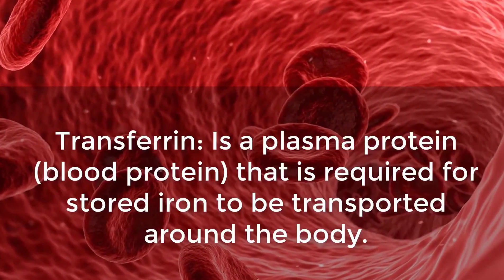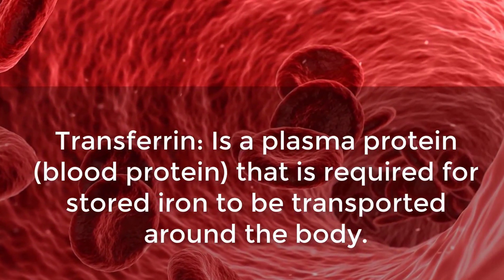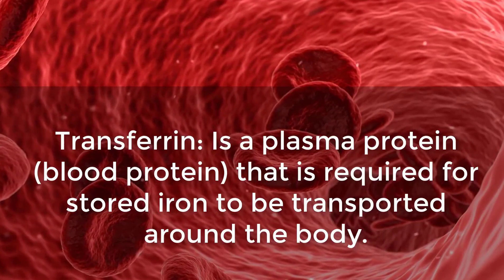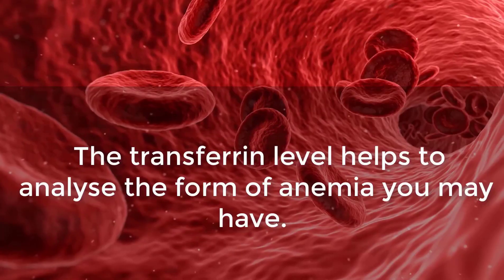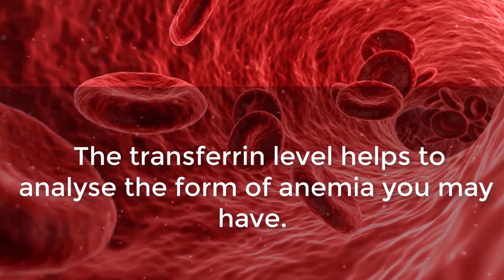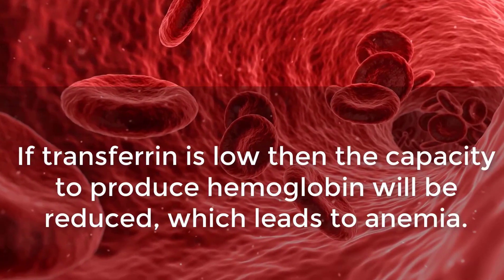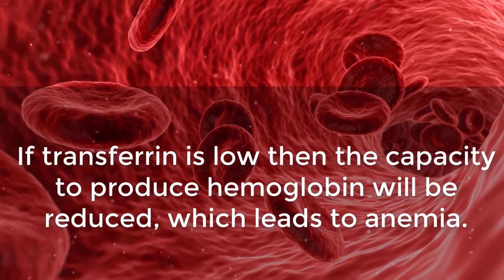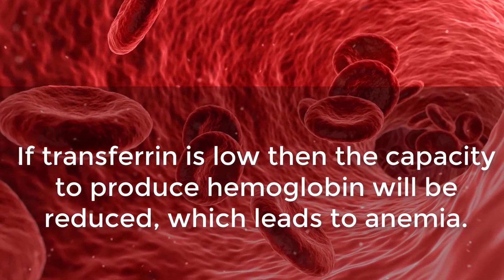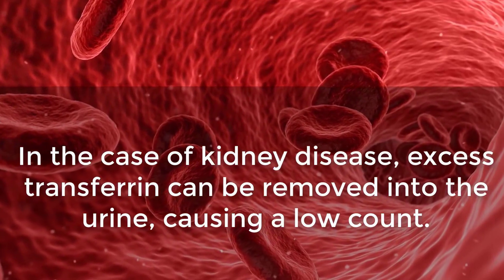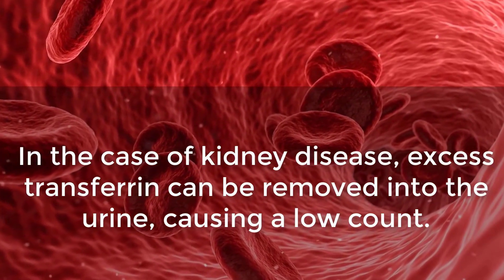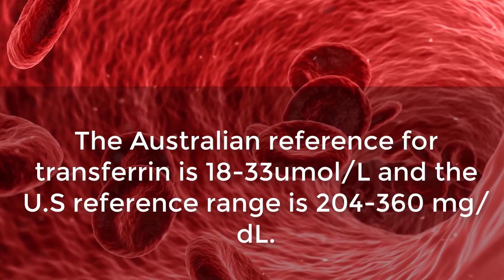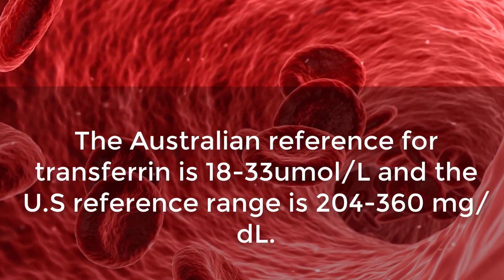Transferrin is a plasma protein required for stored iron to be transported around the body. The transferrin level helps to analyze the form of anemia you may have. If transferrin is low, the capacity to produce hemoglobin will be reduced, which leads to anemia. In the case of kidney disease, excess transferrin can be removed into the urine, causing a low count.